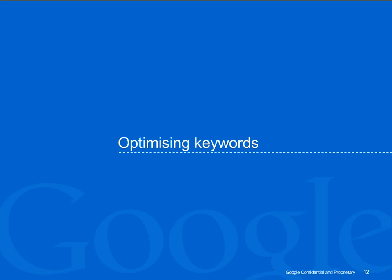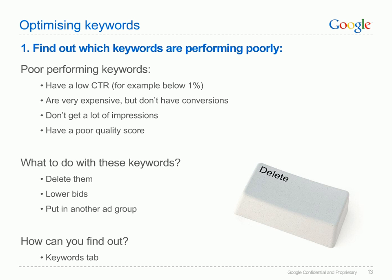We now move on to look at effective keyword lists. When optimising keywords, first filter which keywords are performing poorly. Check for those with a low CTR or a high cost with a low return. Keywords with low impressions and low quality score should be considered also. Removing low performing keywords is not the only option. Lowering your bid and switching them to another, more relevant ad group may improve overall performance. Look at the keywords tab on your campaigns page to see performance statistics and make changes.